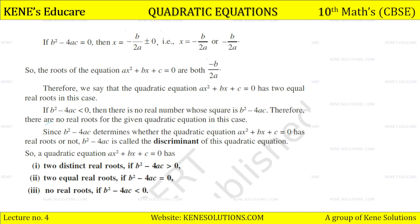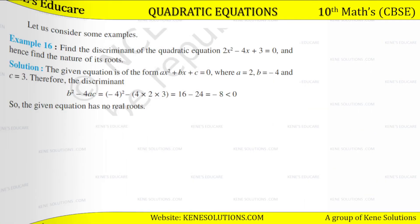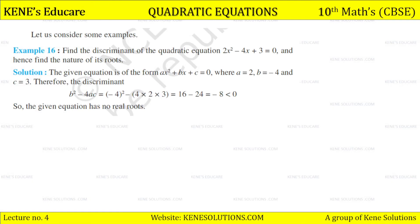So the quadratic equation ax² + bx + c = 0 has: two distinct real roots if discriminant b²−4ac is greater than 0; two equal real roots if b²−4ac is equal to 0; and no real roots if b²−4ac is less than 0.